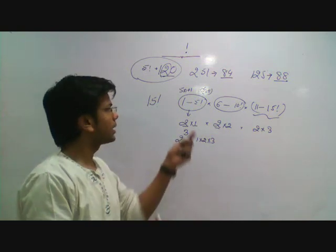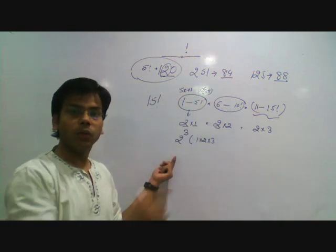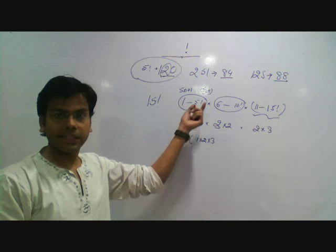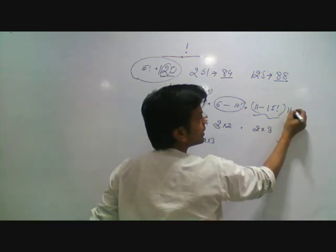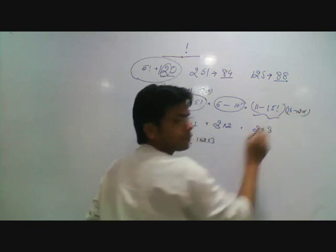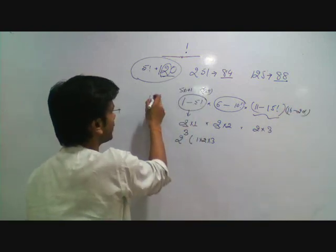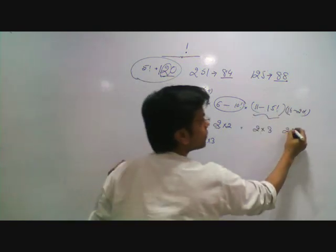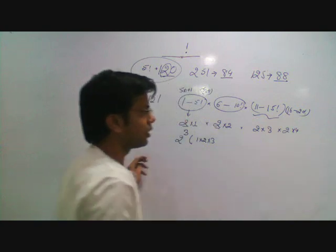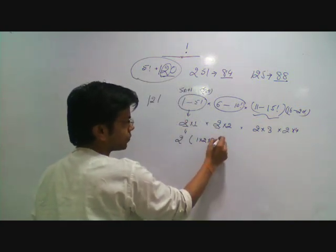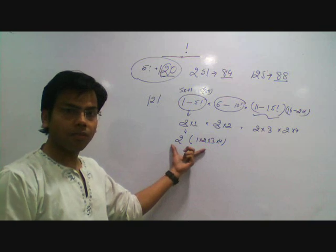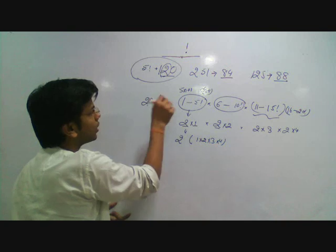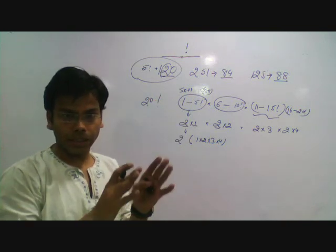In a bundle of 5 starting from 5n+1 to 5n+5, we end with 2 into the multiple count of 5. For 16 factorial to 20 factorial, the total is 20 factorial, with a bundle of 5 from 16 to 20, giving 2 into 4. So if we take out 2, that is 2 raised to 4 into 4. The last digit of this value gives the last non-zero digit of 20 factorial.